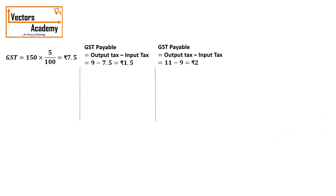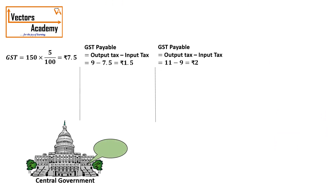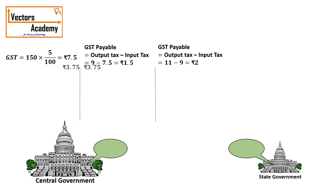GST is collected by the government, but there are two governments: the central government and the state government. The GST paid at each stage is divided equally into two halves between both governments. For example, if the GST collected is 7.5 rupees, each government gets 3.75 rupees. The wholesaler's GST payable of 1.5 rupees is split into 0.75 each, and the retailer's GST payable of 2 rupees is also split in two halves. Hence the total GST of 11 rupees is divided exactly — 5.5 to the central government and 5.5 to the state government.